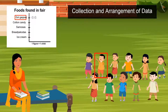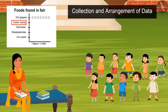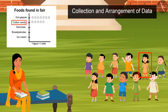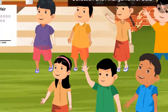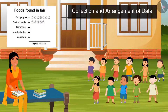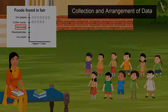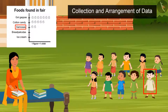Who all wants to eat gol gappas? 1, 2, 3, 4, 5, 6 and 7. Who all wants to eat cotton candy? 1, 2, 3, 4 and 5. Sister, I have cavities, so I can't eat sweet things. Okay, who all wants to eat samosas? 1, 2 and 3.